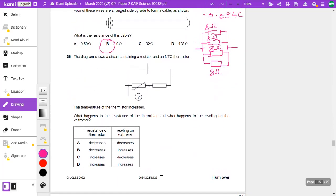Okay, question 36, last one on this page. Diagram shows a circuit containing a resistor and an NTC thermistor. The temperature of the thermistor increases. What happens to the resistance of the thermistor, and what happens to the reading on the voltmeter? Now, this gets a bit weird, but in this case, the thermistor, the resistance is going to decrease. And because the resistance decreases, that actually means there's going to be more voltage across it. So it's going to be decrease and increases. It's going to be B.